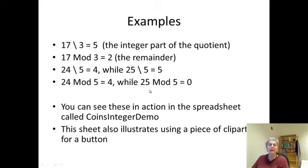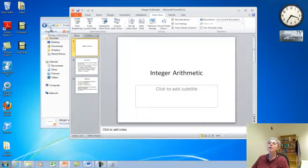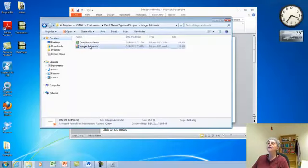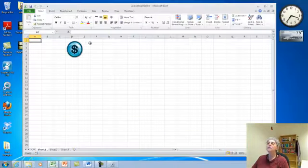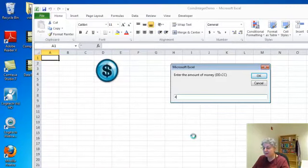Now let's take a look in an example where we actually use these for something reasonably useful. And I'm going to take a look at the coins integer demo in Excel. So first let me show you what it does. I'll push this, and I'll enter an amount of money. So let's say it's 4 dollars and 67 cents.